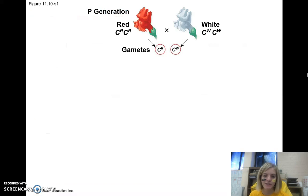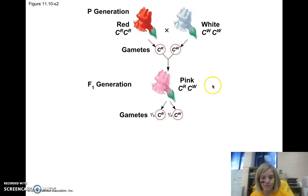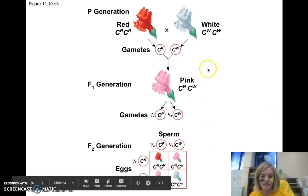Here's an example of incomplete dominance in a carnation plant. We have a purebred red parent and a purebred white parent, so they donate a pure red and pure white allele. In the F1 hybrid generation, we get CRCW. Even though red is technically dominant, we end up with a blend between phenotypes. We still know the blending rule of inheritance isn't true because the alleles have still segregated and assorted independently.